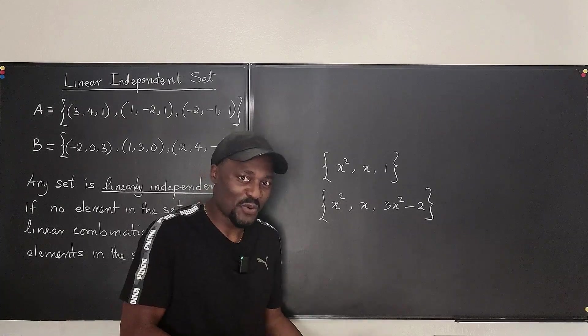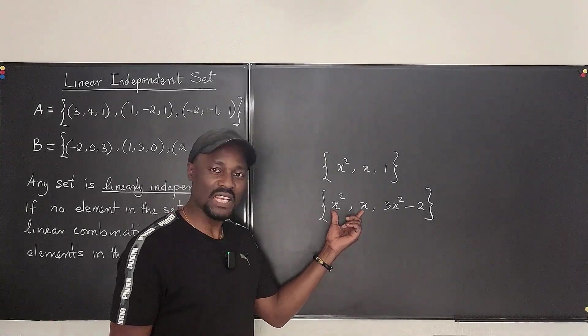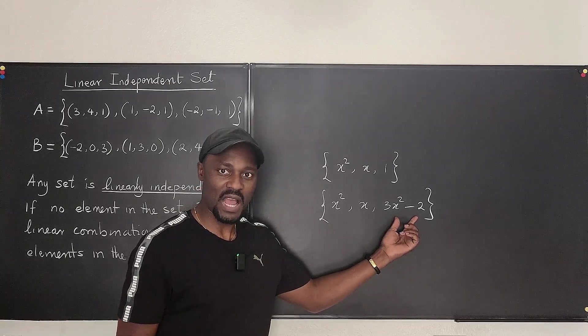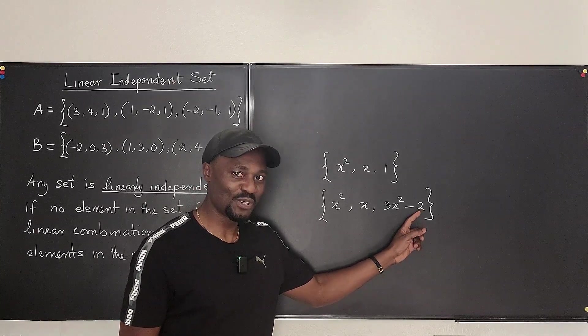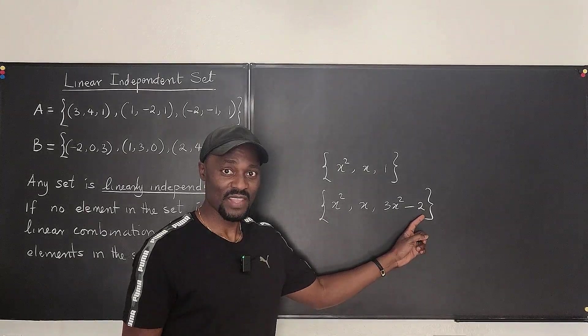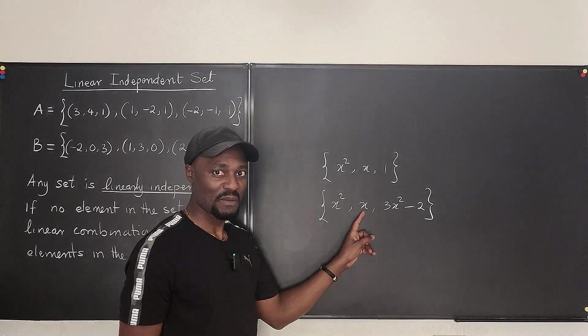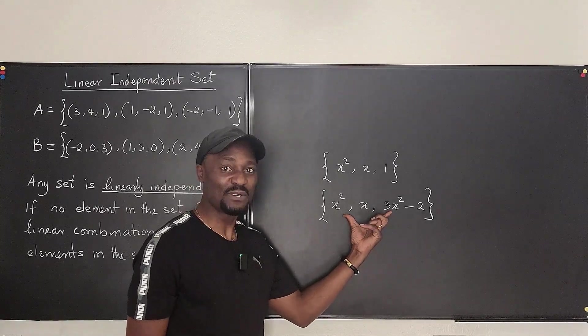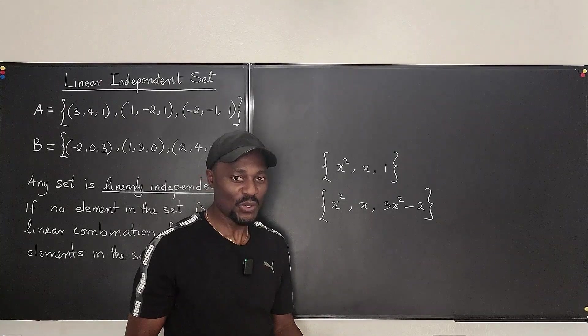Now this looks like a tougher question. Well, these two can never gang up to get rid of this guy because this guy here has the number 2. These two cannot generate 2. Can these two gang up to get rid of x? No, because these two can never generate x. Do you see the idea of linear independence?